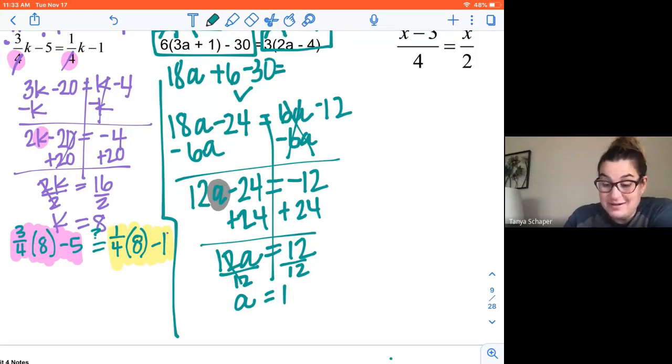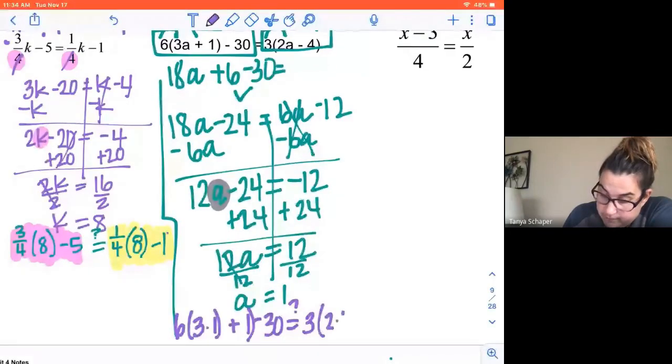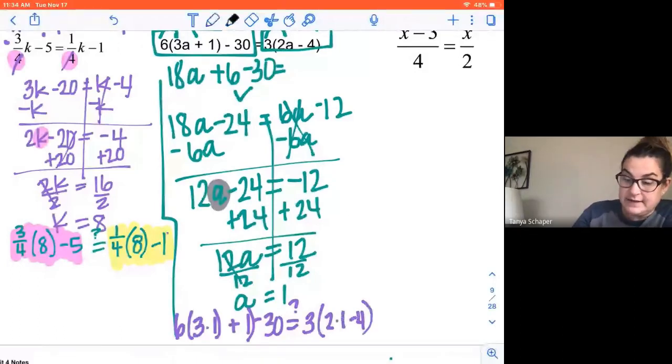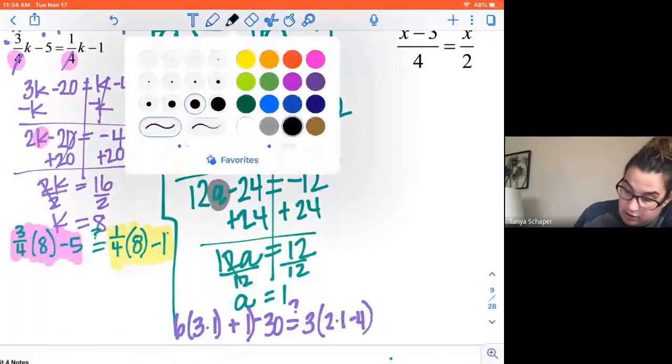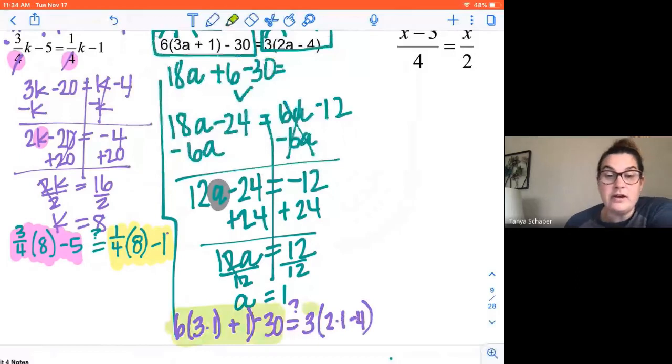Now again, the check is really important. So I'm going to write down what I need to check. Is 6 times the quantity 3 times 1 plus 1 minus 30 the same as 3 times 2 times 1 minus 4? And what you want to do is type in what's on the left side in your calculator. What do you get for an answer? Type your right side in. What do you get for an answer? Making sure you're working through that. If they're both the same, we know that we're good.